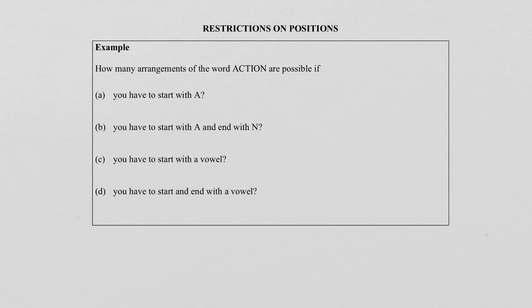In this example, you will notice that I use the word ACTION again. We did this problem in the previous episodes with repetition and without repetition. When we read this, you will notice they say how many arrangements of the word ACTION are possible. They didn't say those letters may repeat or not repeat, but they say arrangements of the word ACTION, so only these letters can be used — meaning you can only use them once. It's very important to read this carefully.